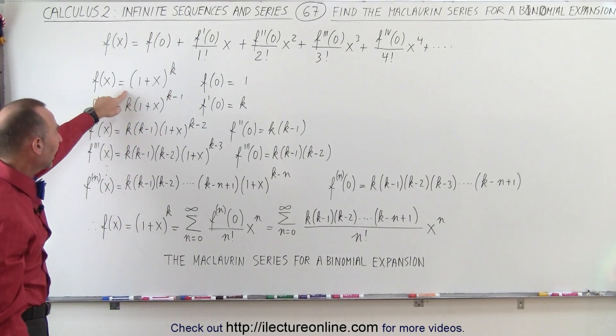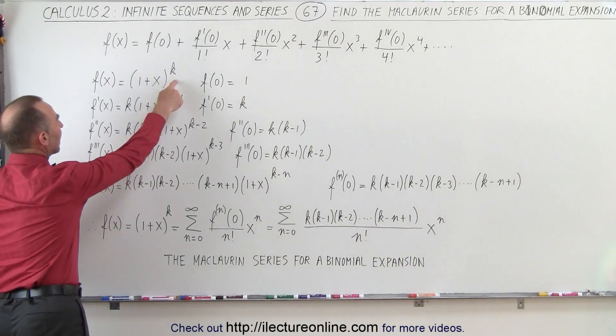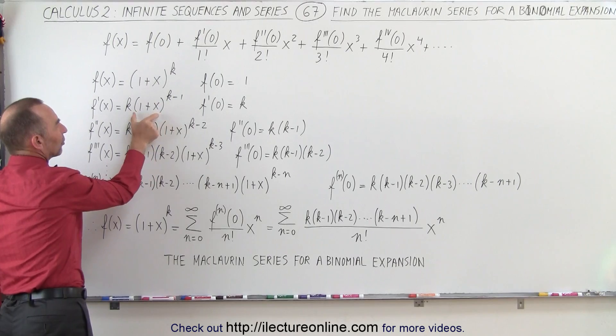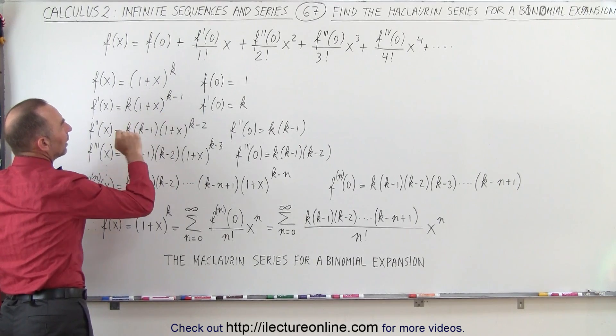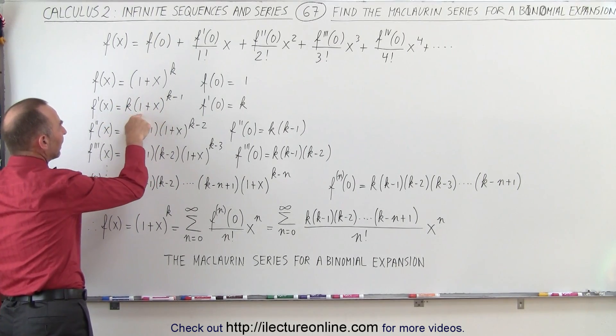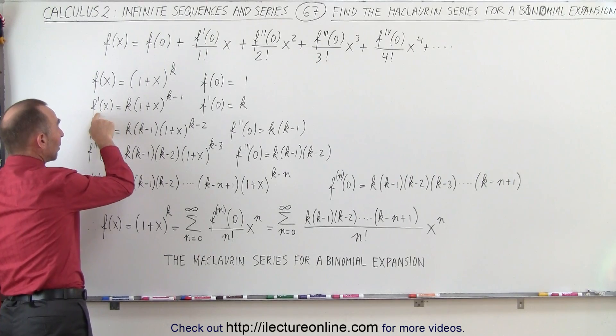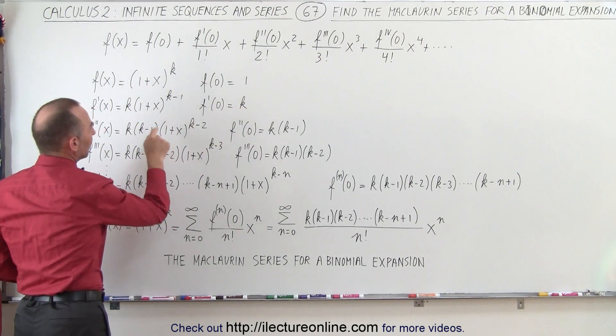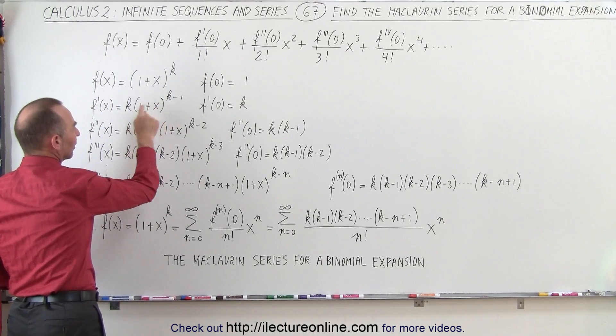If we now take the first derivative of that, we use a chain rule. We put k in the front, have k minus 1 as the new exponent times the derivative of what's inside, which is 1. And then if we evaluate that at f prime of x, x being equal to 0, we get a k because then this becomes 1. 1 times k is k.